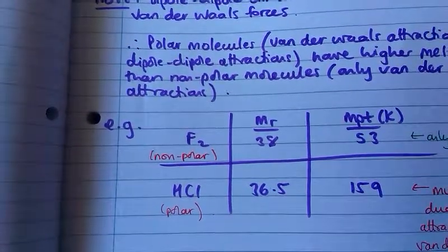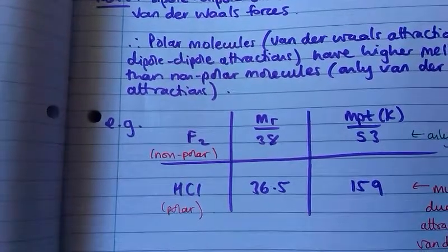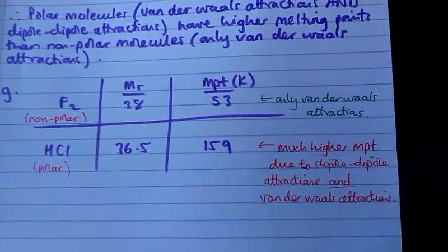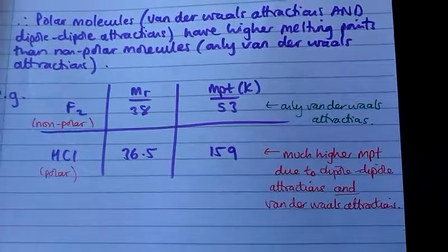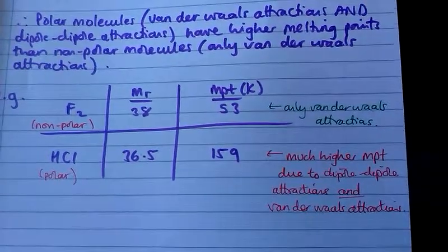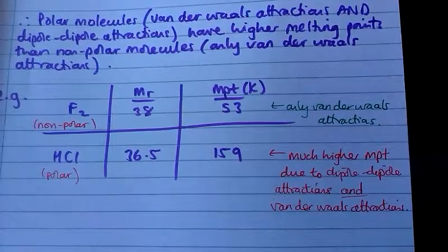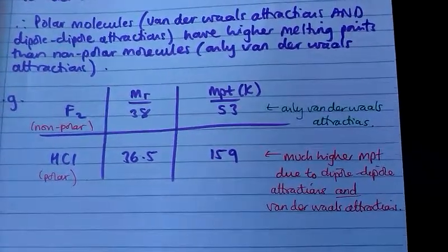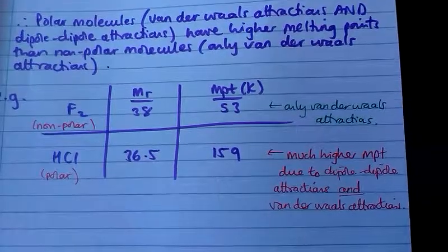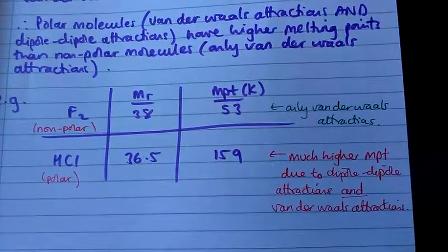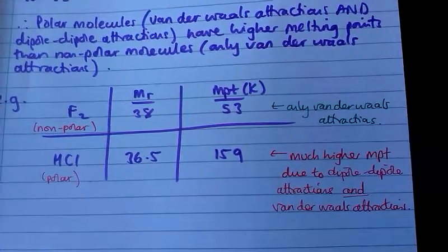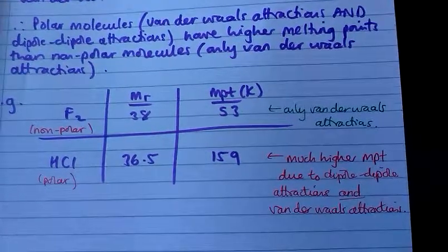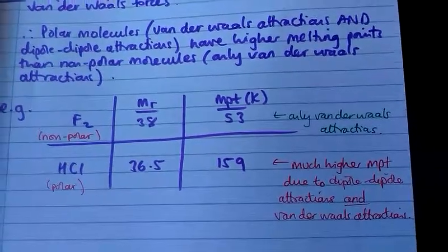Notice that both of these have similar molecular weights. But because fluorine is non-polar, it only has van der Waals attractions, whereas HCl is polar — it has dipole-dipole attractions and van der Waals attractions between those molecules, and that results in it having a much higher melting point than fluorine.